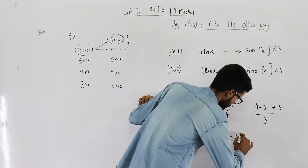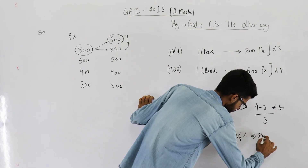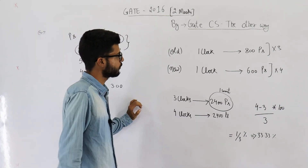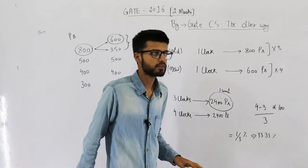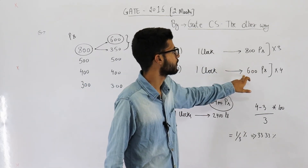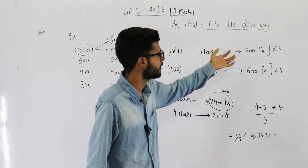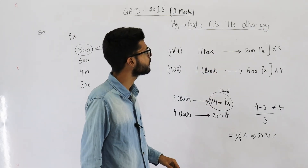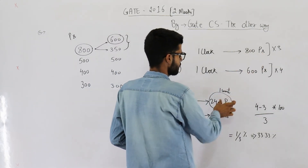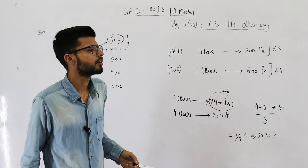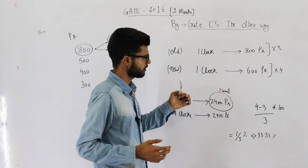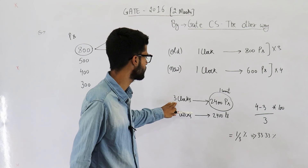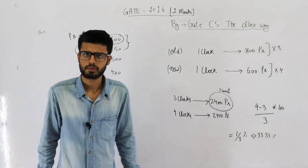That's the answer: 33.33 percent. To summarize: first find the clock period for both processors, then equalize the time by finding LCM (2400 picoseconds). In that time, the old design generates 3 clocks and the new design generates 4 clocks. Find the percentage increase — that's it. You can solve such questions mentally with this approach.